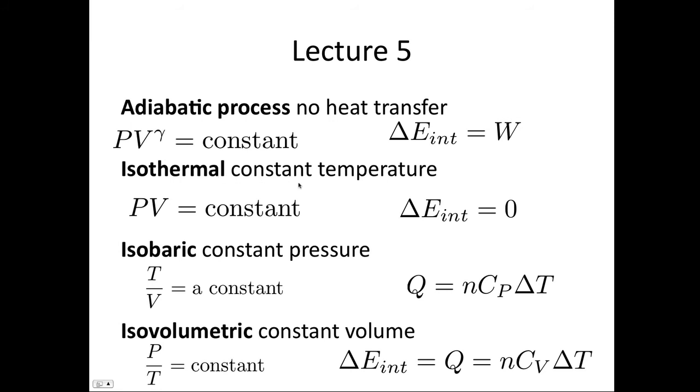An isothermal process is one at constant temperature. So in this case, PV is constant from our ideal gas law, and there is no change in the internal energy, as the internal energy is a function of the temperature. So the change in internal energy in this case is zero. If we do something very slowly, then there's always time for it to come to equilibrium with its surrounds, and so this would be an isothermal case.